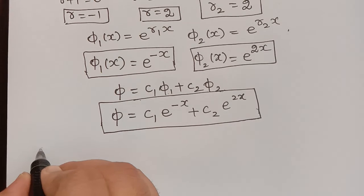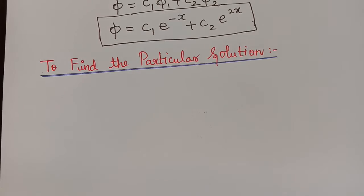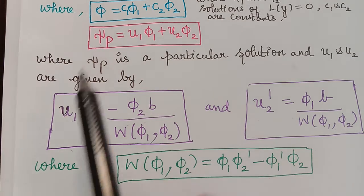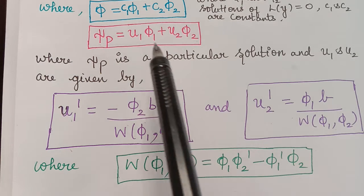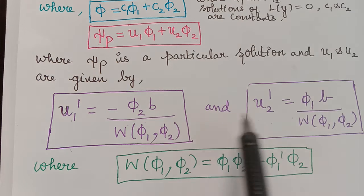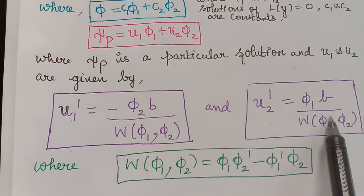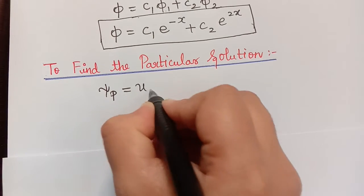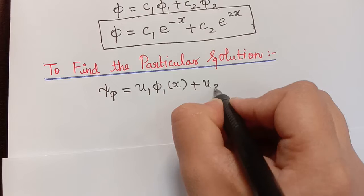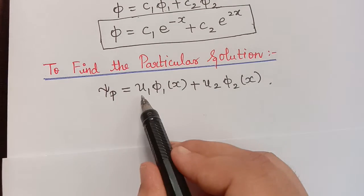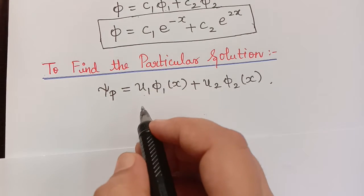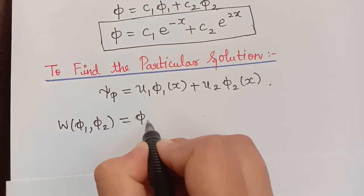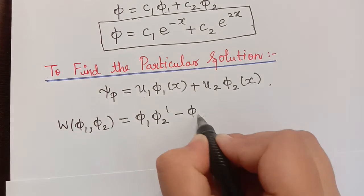Now we have to find the particular solution xi_p equal to u1*phi1(x) plus u2*phi2(x). To evaluate u1 and u2 we first need the Wronskian. The Wronskian of phi1 and phi2 is given by: W(phi1, phi2) = phi1*phi2' minus phi1'*phi2.